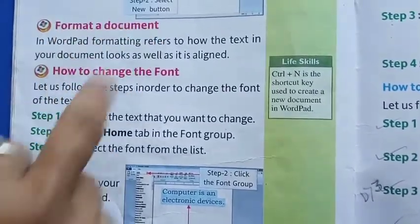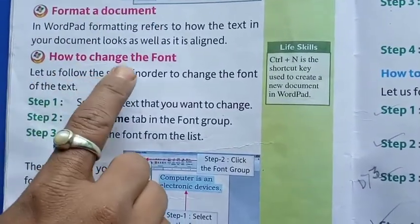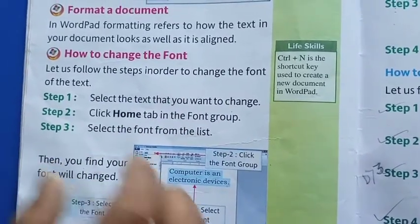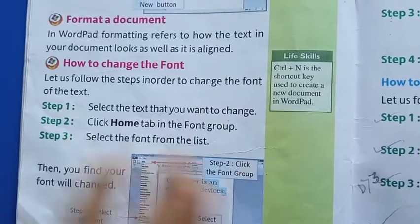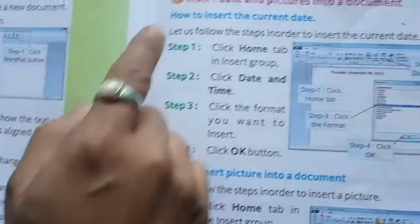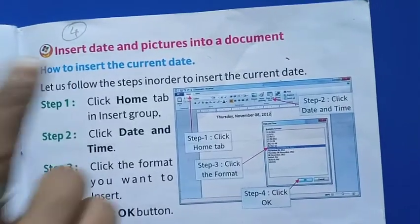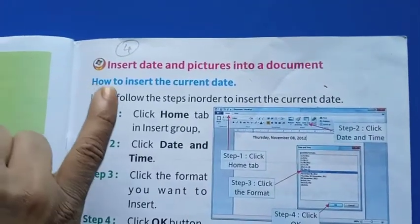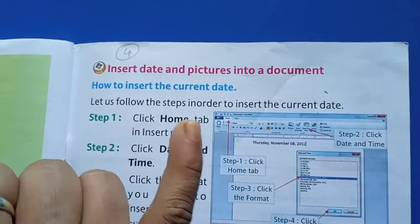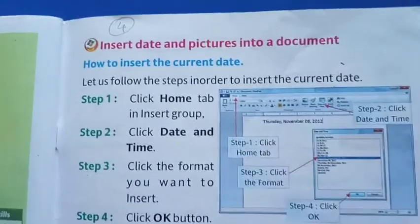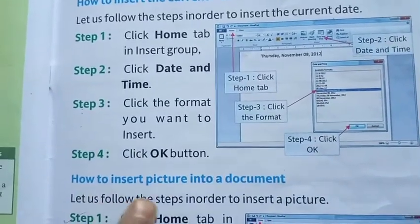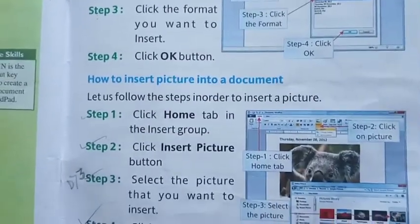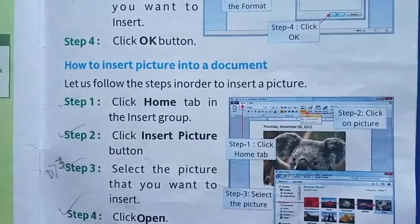Format a document. How to change the format? How to insert data and pictures into a document? How do we insert the picture in 4 steps?